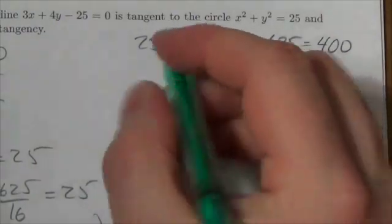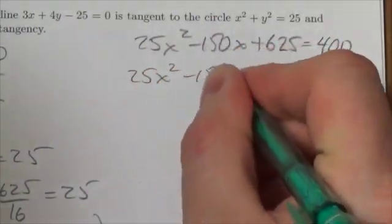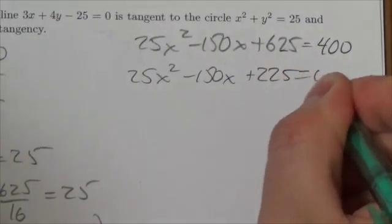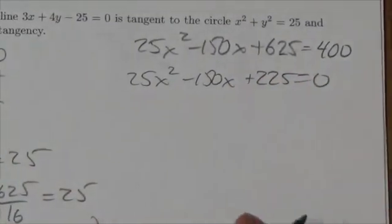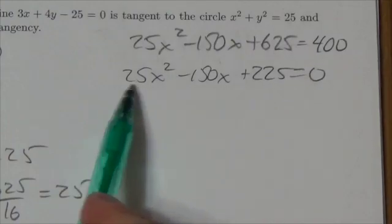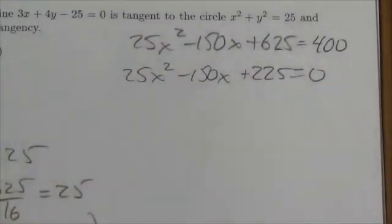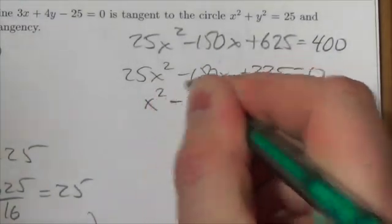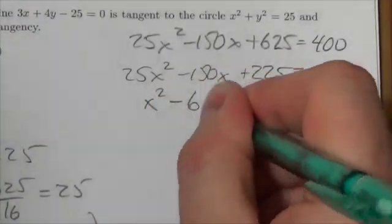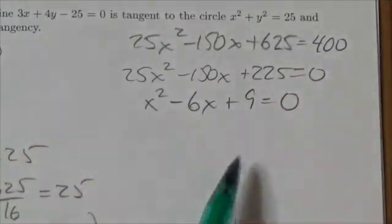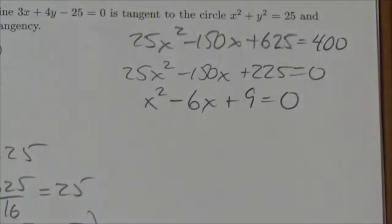Now let's bring everything over. So 25 x squared minus 150 x, bring that over, will be plus 225. Okay, and now I can see quite clearly that I've got a common factor of 25 to all this thing. So I'm going to divide both sides of the equation by 25. That's going to give me x squared minus 6x plus 9 equals 0. And this takes me down to a really nice quadratic.